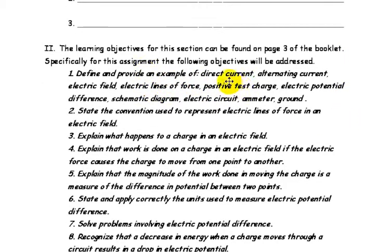Define and provide an example of direct current, alternating current, electric field, electric lines of force, positive test charge, electric potential difference, schematic diagram, electric circuit, ammeter, and ground.